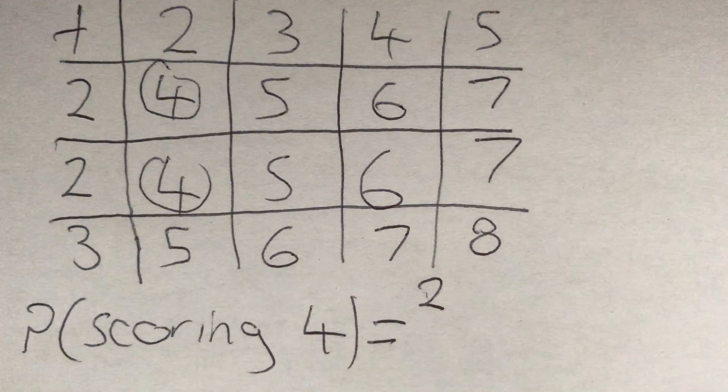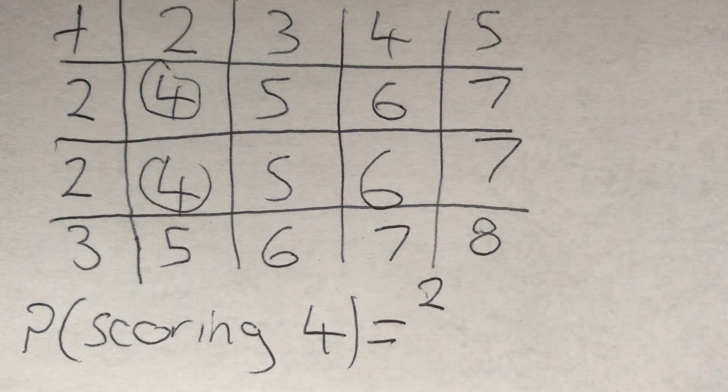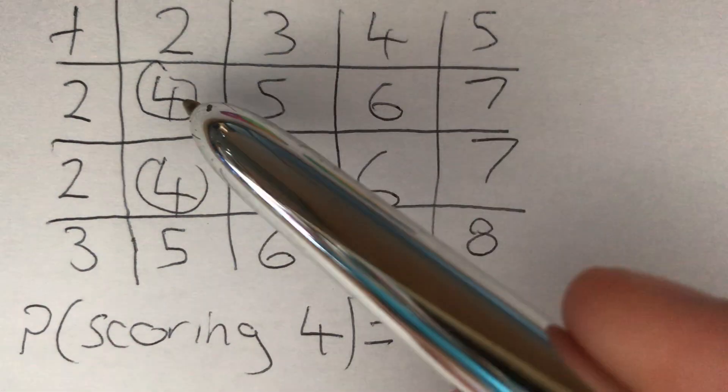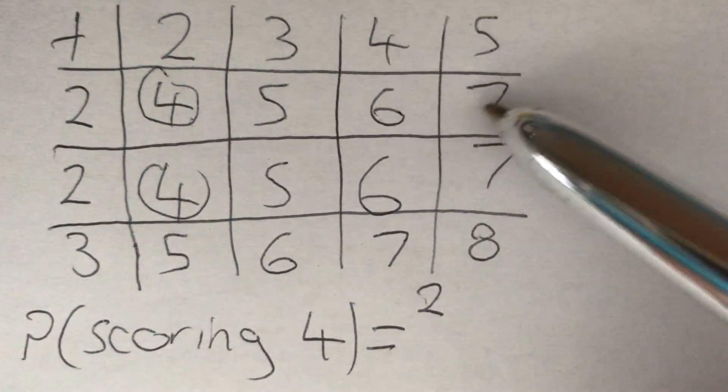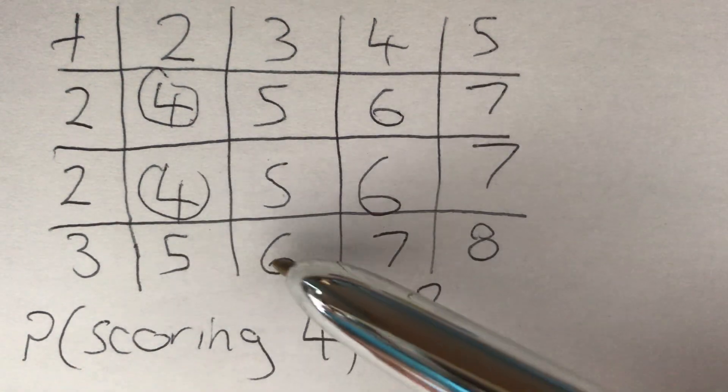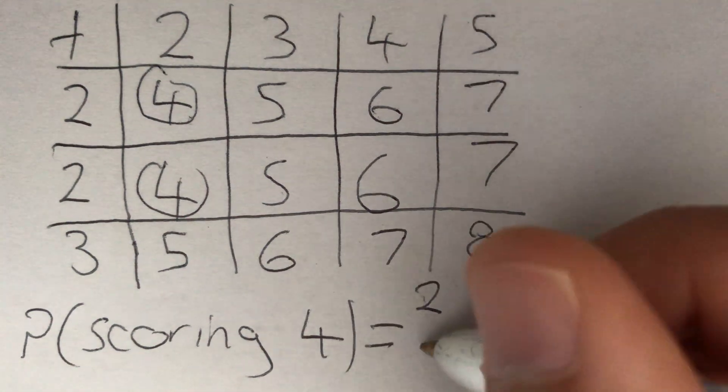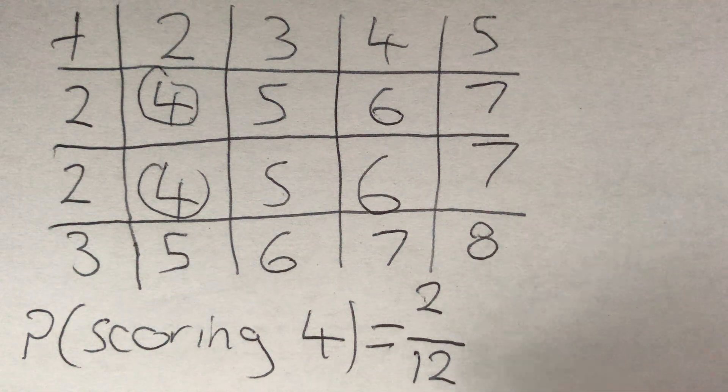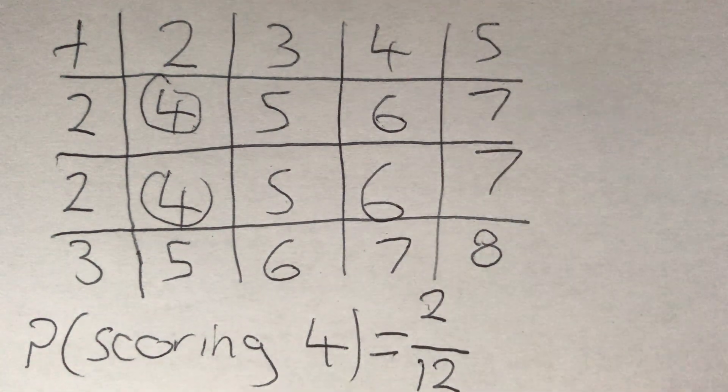And that's going to be out of the total number of outcomes for the whole sample space diagram. For that, we just need to count up all of our total outcomes. So 1, 2, 3, 4, 5, 6, 7, 8, 9, 10, 11, 12. So it's 2 out of our possible total 12 outcomes. The probability of scoring a 4 is 2 out of 12.